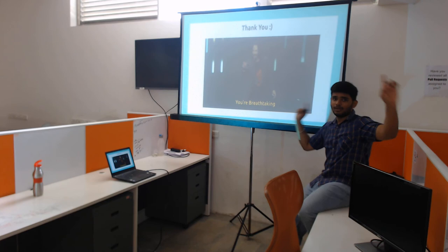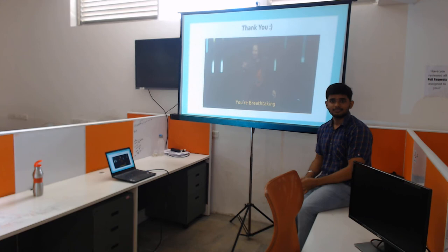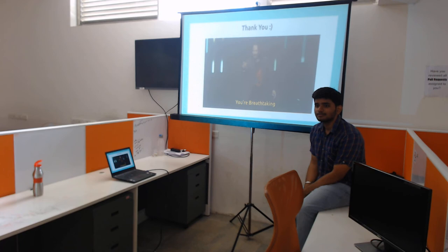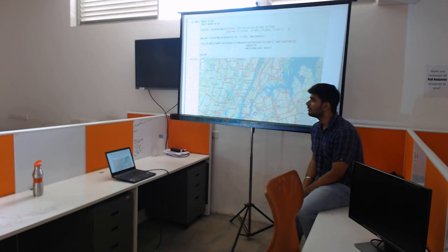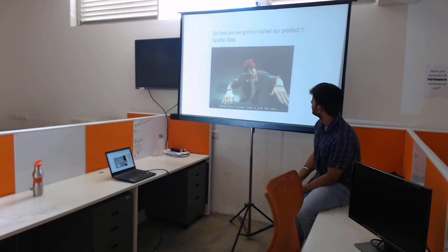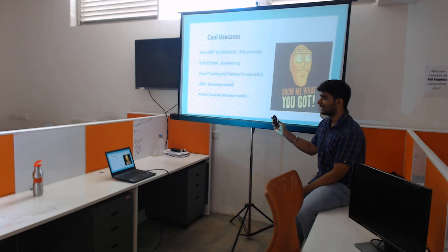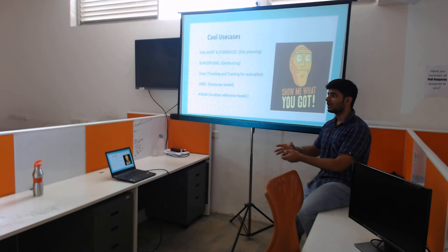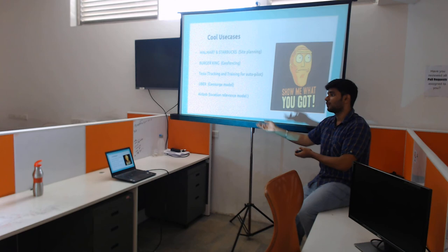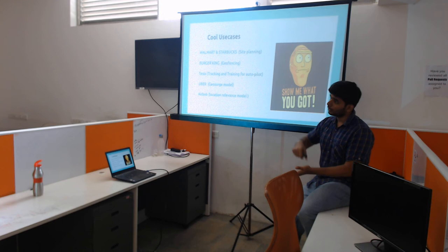Question about the visualization shown: how do you specify and load a choropleth map? You specify it in that location. Regarding the Airbnb location relevance model — for example, if you are looking from Bangalore and want to stay in New York, it will show you options A, B, and C because people from Bangalore prefer those. But if you are booking from another city, it will show a different set. It depends on your previous bookings as well, taking into account your current location and the location of the place you have booked.